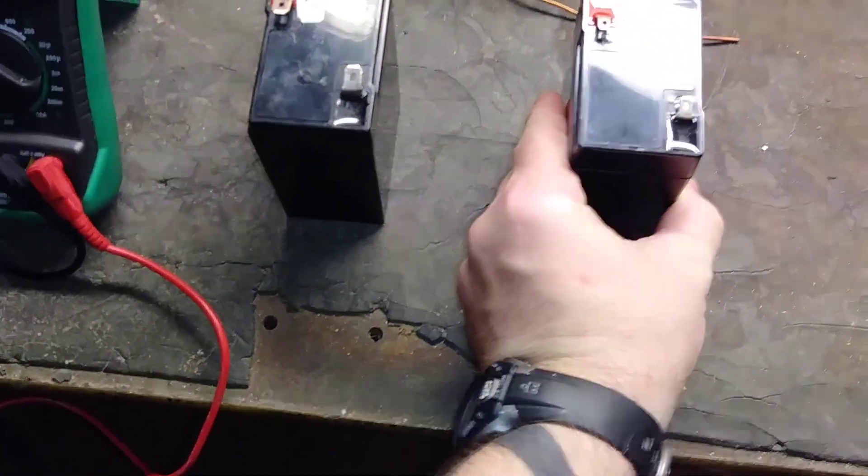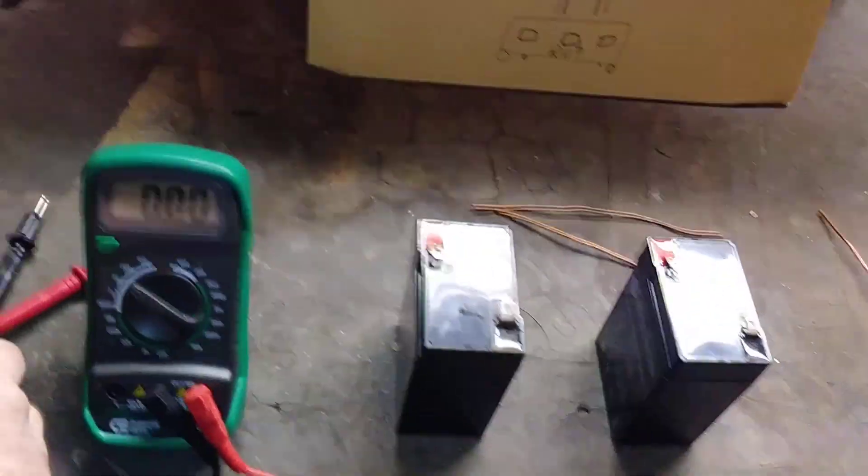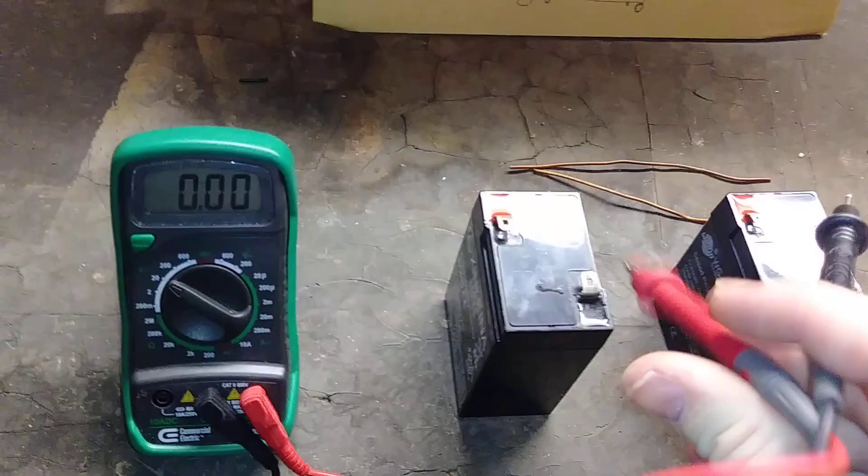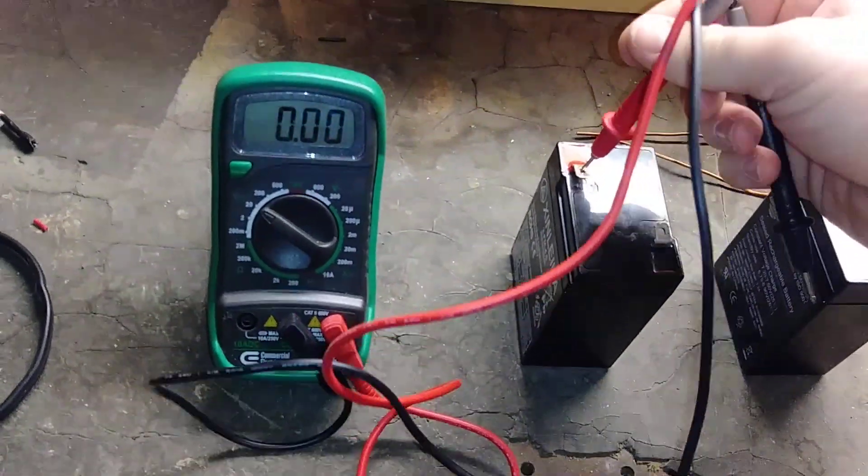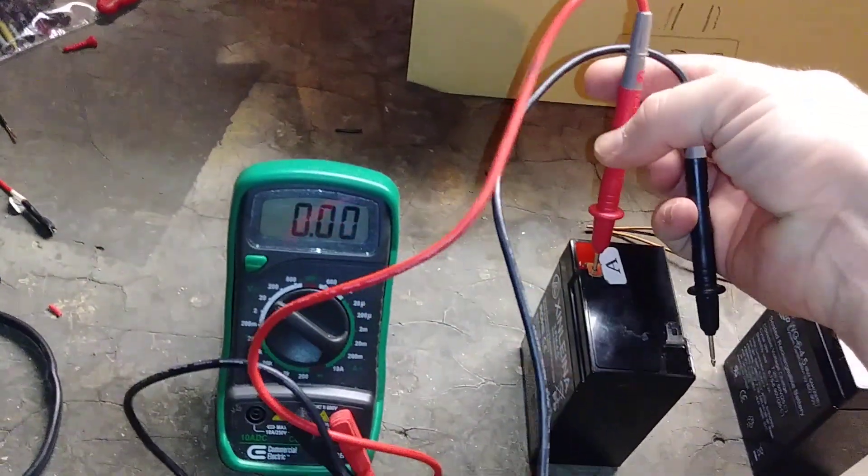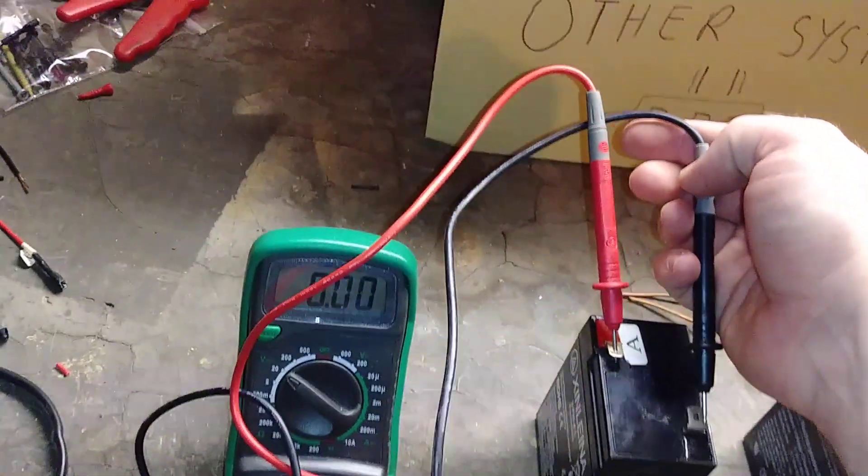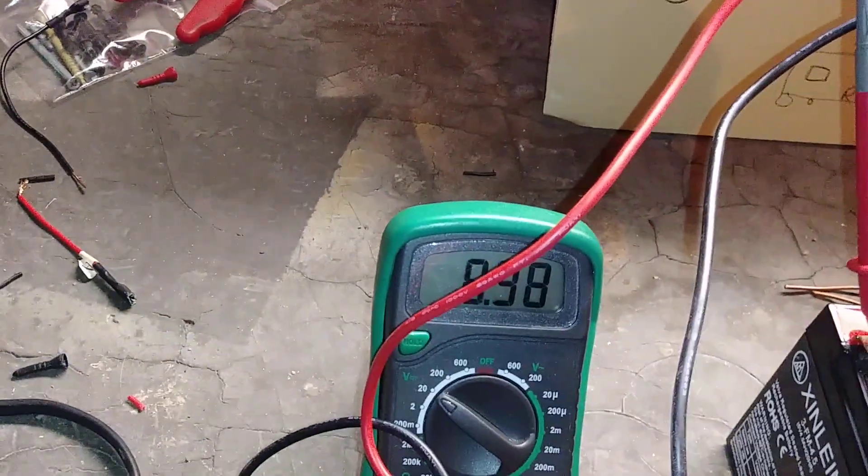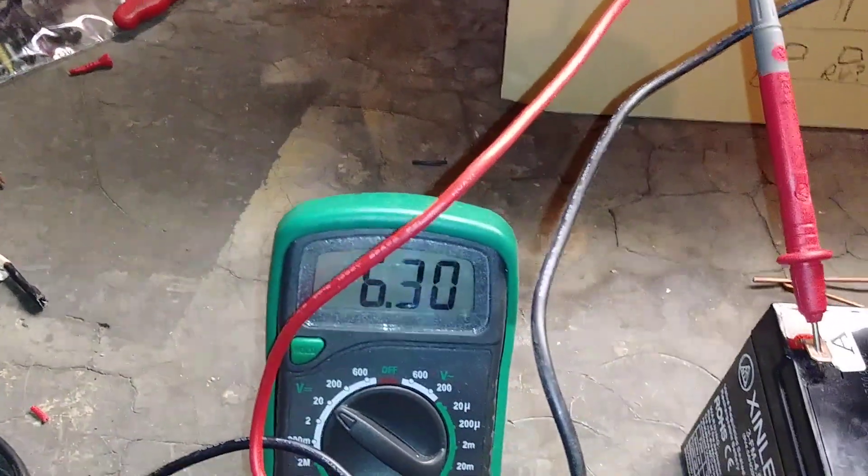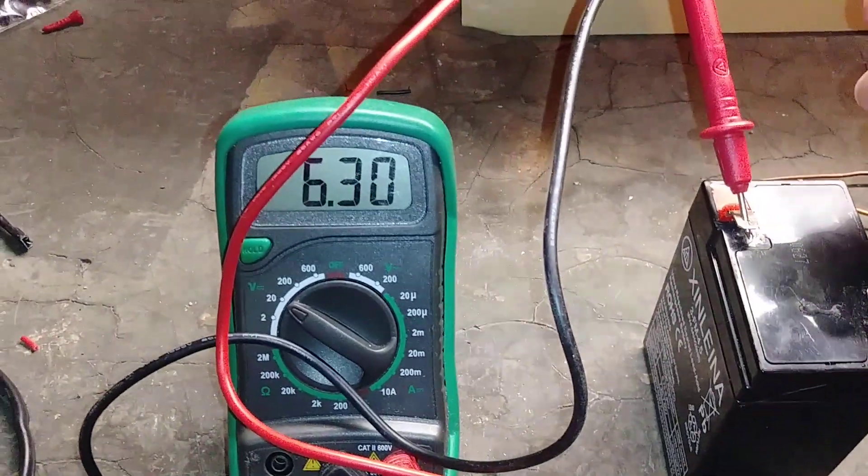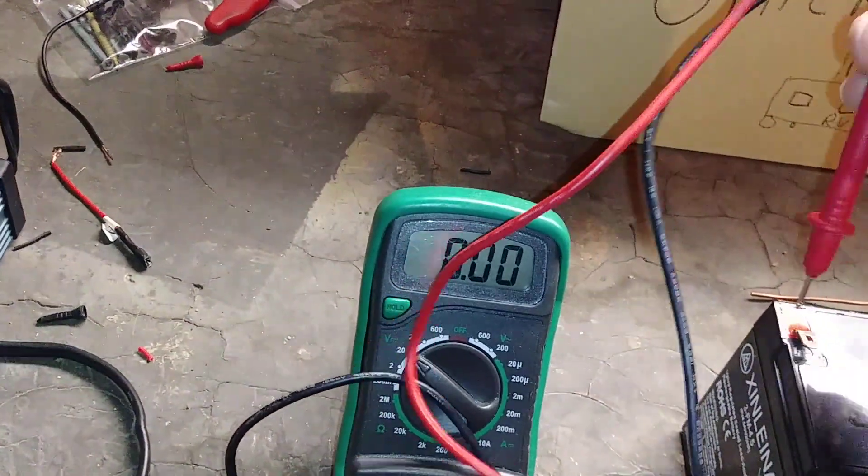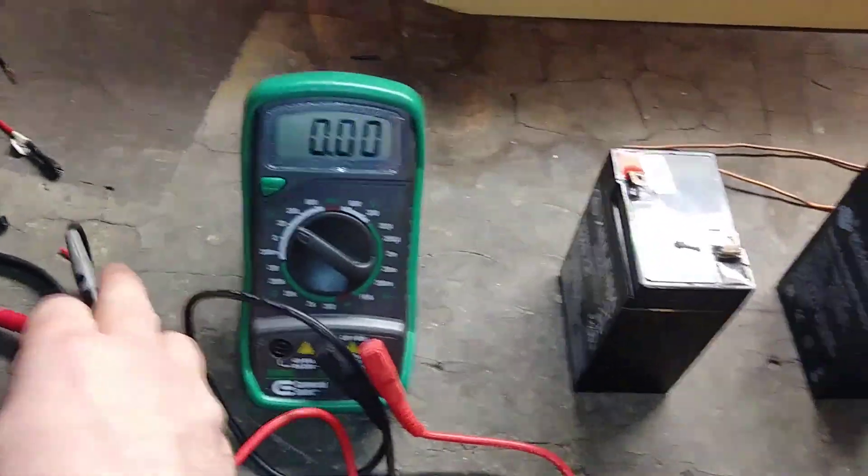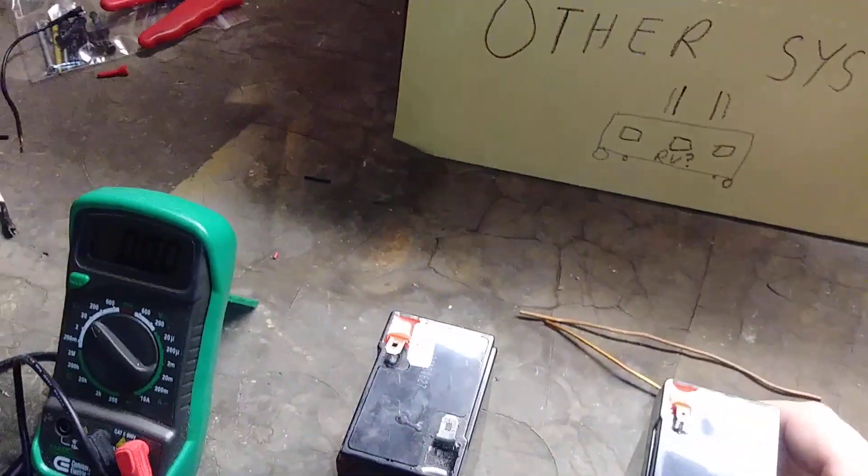The first thing we're gonna do is test these six-volt batteries with our multimeter to make sure they're actually six volts. I'm gonna try and do this with one hand. We see on the multimeter it goes to 6.3 which is good. The battery is charged and it's okay if it's charged more than actual six volts.